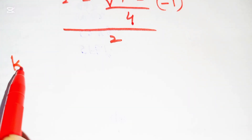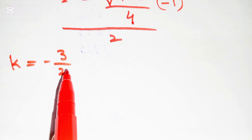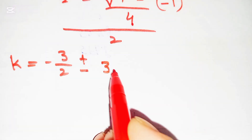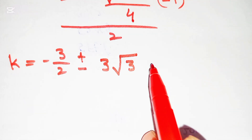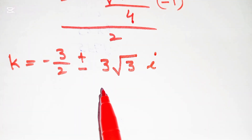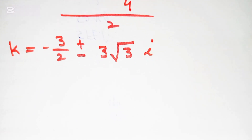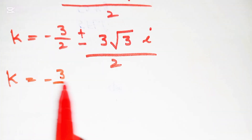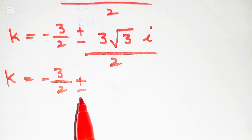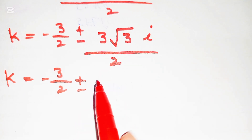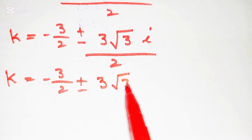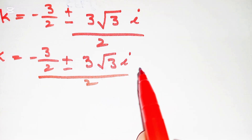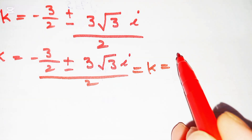Since 9 comes out of the square root as 3, we get k = (−3/2 ± 3√3·i/2) / 2.